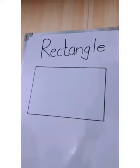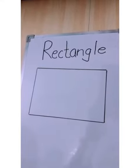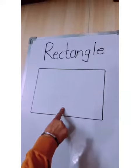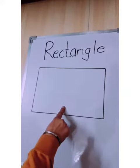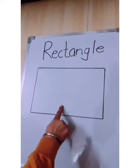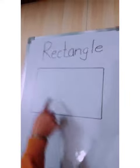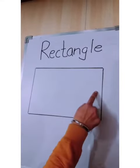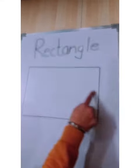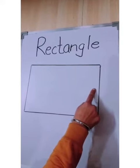So can you see the shape? Which shape is this? This is a rectangle shape. Its opposite sides are equal, as you can see in the picture. So let's see some pictures related with rectangle shape.